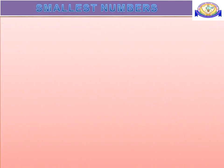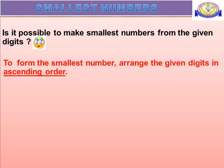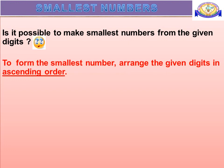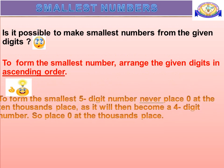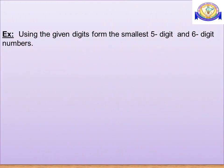Now we will see how to make the smallest number from the given digits. To form the smallest number, arrange the given digits in ascending order. Remember this: to form the smallest 5-digit number, never place 0 at the 10,000th place, as it will then become a 4-digit number. So place 0 at the 1,000th place. Now we will see the examples.